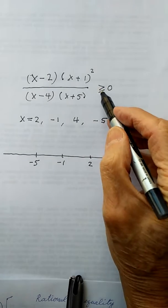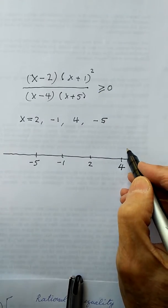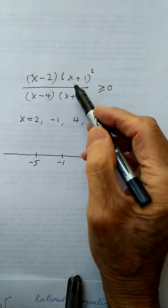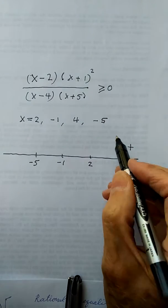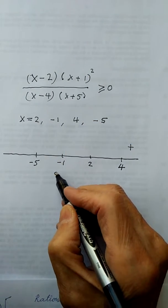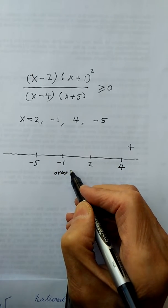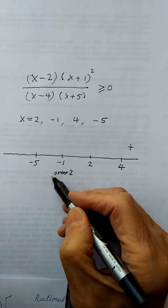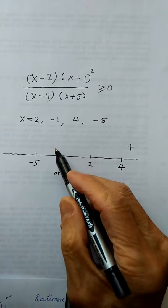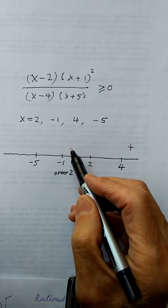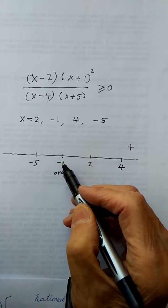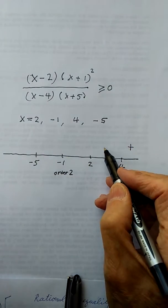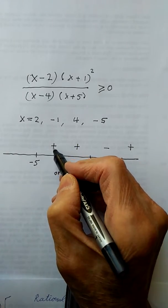I want larger than 0 or equal to 0, which means positive. The x squared term is positive, and everything is positive, so I start with positive. But remember, negative 1 is order 2. As shown in the last video, if you have even order, you do not change the plus-minus sign — the signs on both sides of an order-2 zero are the same. So the signs are: plus, minus, plus, plus, minus.